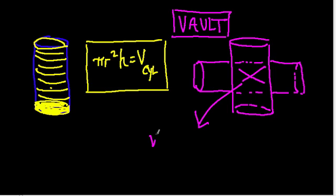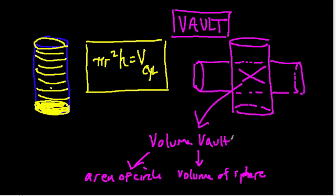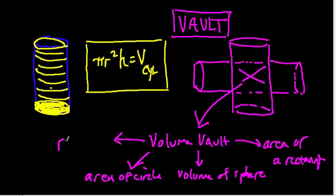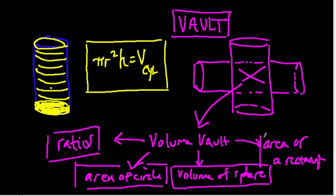We can figure out the volume of the vault using just a few concepts: the area of a circle, the volume of a sphere, the area of a rectangle, and a basic understanding of ratios. It's so neat that we can solve something that seems so complicated — a shape that seems so difficult to think about — without calculus, just by using these simple concepts: spheres, circles, ratios, and areas of rectangles.